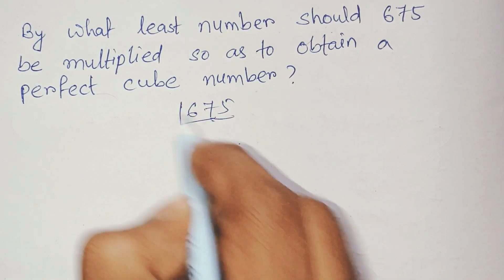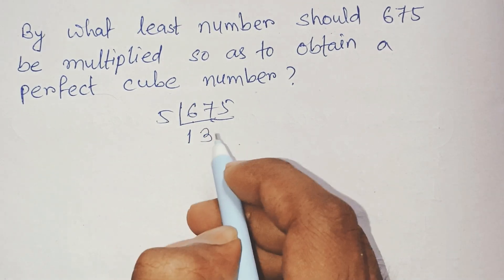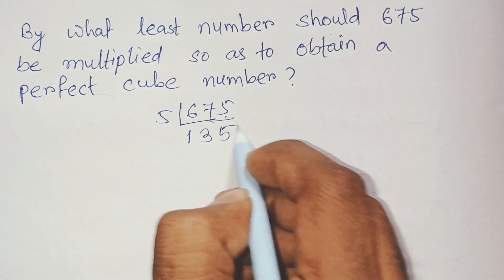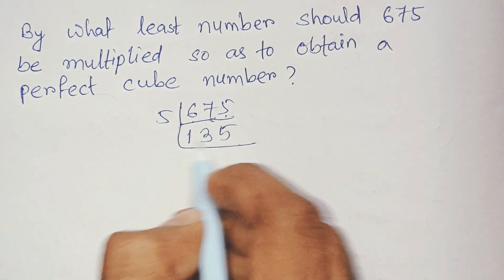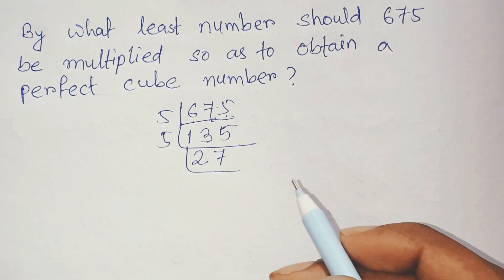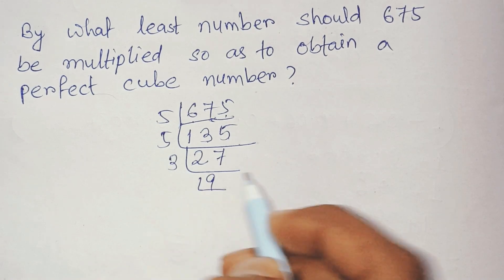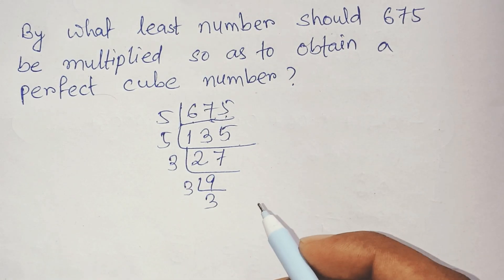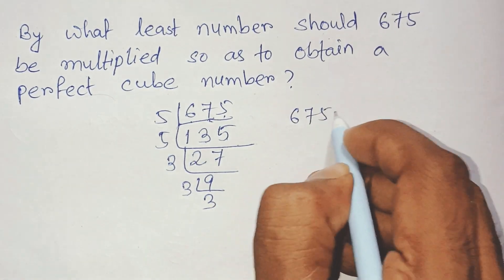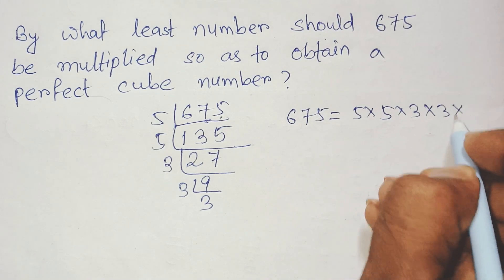Factorizing 675: 675 divided by 5 is 135, 135 divided by 5 is 27, 27 divided by 3 is 9, 9 divided by 3 is 3, 3 divided by 3 is 1. So, 675 is equal to 5 multiplied by 5 multiplied by 3 multiplied by 3 multiplied by 3.